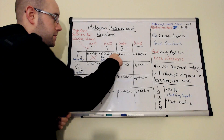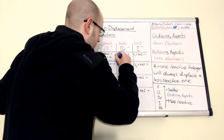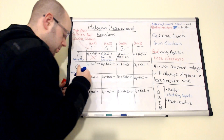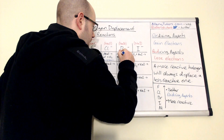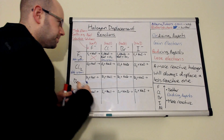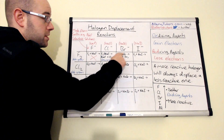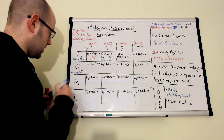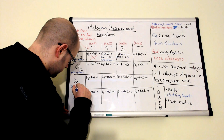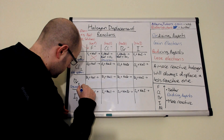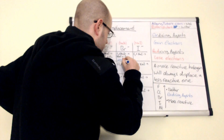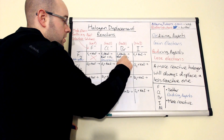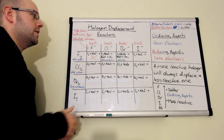Next: F2 plus NaBr. React these together and what you'll form is NaF plus Br2. Remember, halogens always have to go around as a pair. Balancing: put twos in front of NaBr and NaF. Because we've had a displacement reaction, the halide salts are colourless, but bromine is a browny-orange colour. So you should see an orange solution start to form — it'll go from colourless to orange, and that colour change tells you that you've got a displacement reaction.